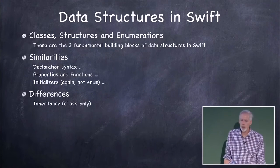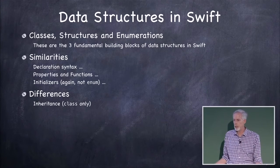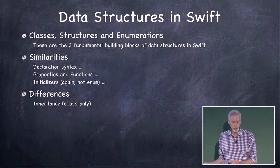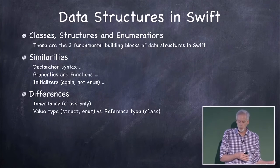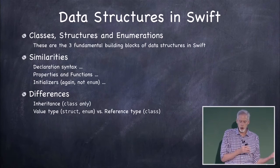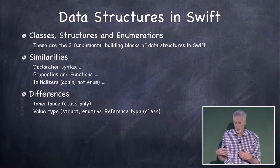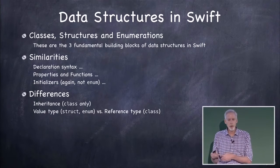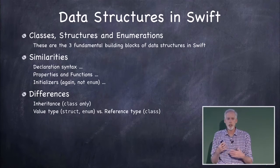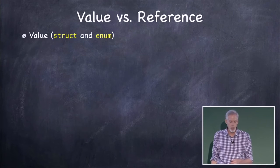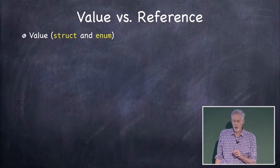Alright, differences, one, inheritance. With classes, you can inherit, structs and enums you can't. Value types, I talked about this before. Structs and enum are value types, they're passed around by value. Class is a reference type, you pass pointers to it around, it lives in the heap. Let's talk a little more about value versus reference.